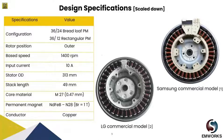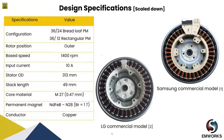Here are the design specifications we are considering for our analysis. We have taken two different commercial models. One is by Samsung, which is an outer rotor surface-mounted permanent magnet motor with Braidloft PM, 36 slots and 24 poles. The other configuration is by LG, which also uses an outer rotor design with 12 poles, rectangular conventional flat magnets, and 36 slots.